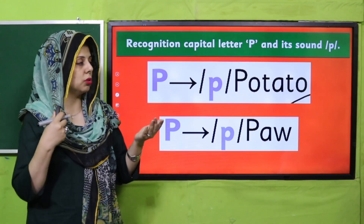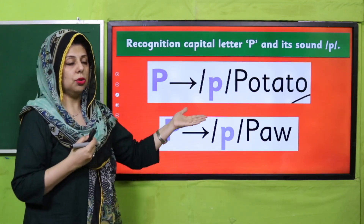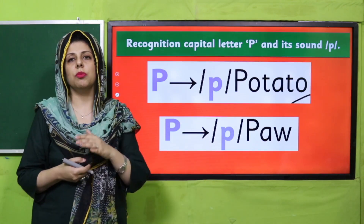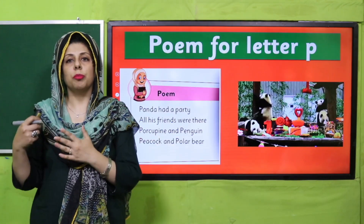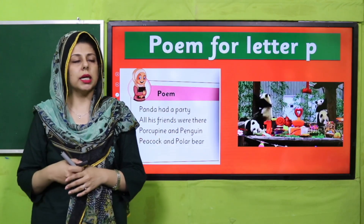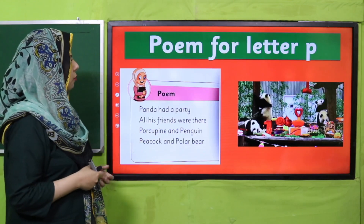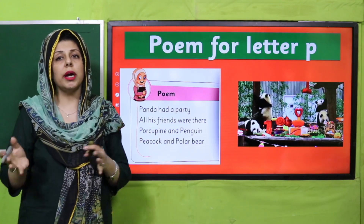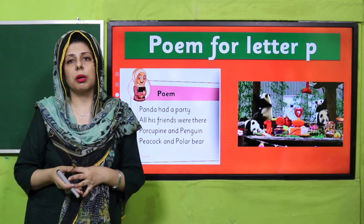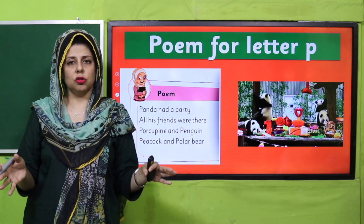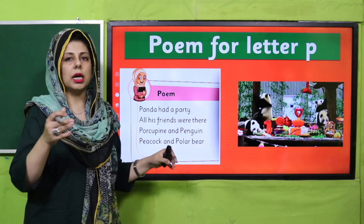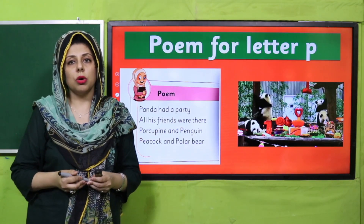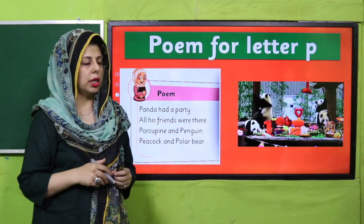Aaj ke hamaare sight words kaun se the — P-potato aur P-paw. So teachers, ye words aap in ki vocabulary mein jo word bank house mein add karein. You can send them to the library corner to find them, or they can also sing a poem. You can divide the task — agar aapke paas poem sing karne ki space hai classroom mein, toh classroom mein sing kar lein, otherwise you can sing it in the playground. Library corner wali activity ko aap zaroor engage karna hai aaj bachon ke saath.